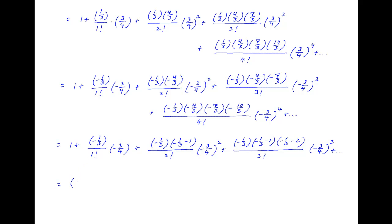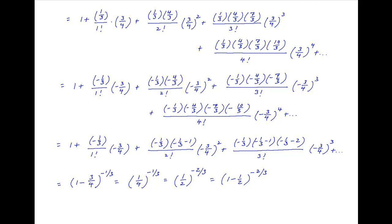Notice that this is the binomial expansion of (1 − 3/4) raised to the power (−1/3), which is equal to (1/4) raised to the power (−1/3). Since 1/4 equals 1 over 2 squared, this further simplifies to 1 over 2 raised to the power (−2/3).